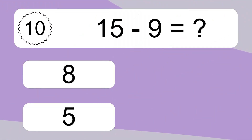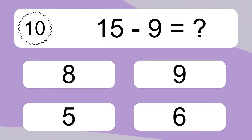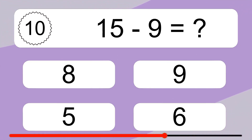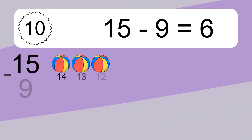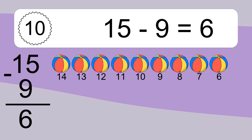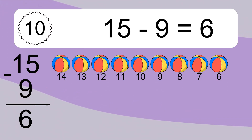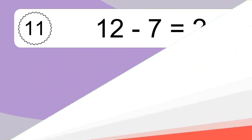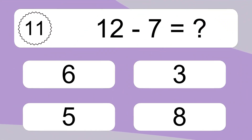15 minus 9 equals what? 15 minus 9 equals 6. Let's count it: 14, 13, 12, 11, 10, 9, 8, 7, 6.